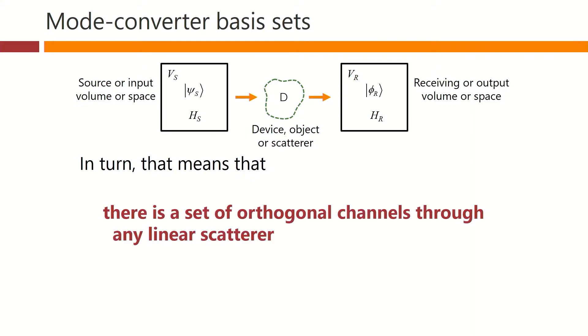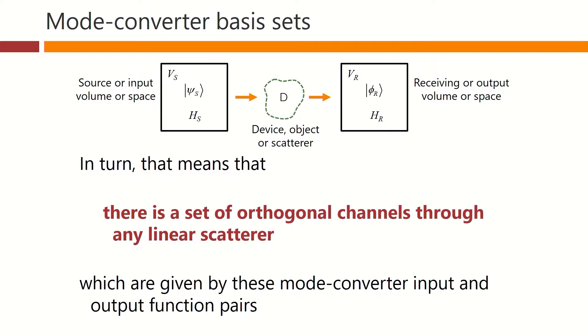In turn, that means that there is a set of orthogonal channels through any linear scatterer. And these sets of channels are simply given by these mode converter input and output function pairs.